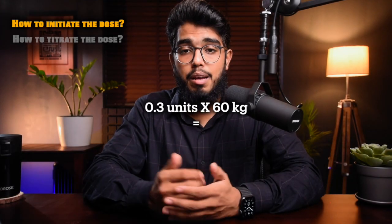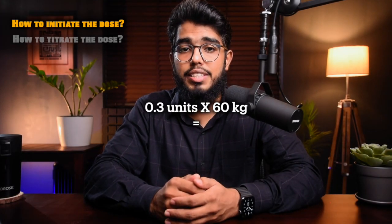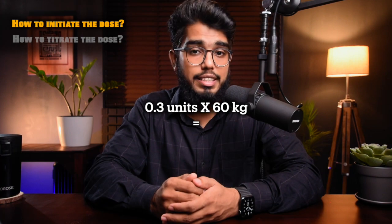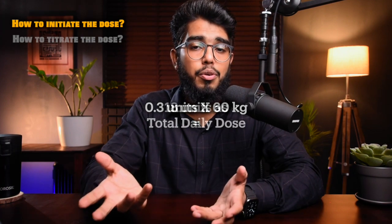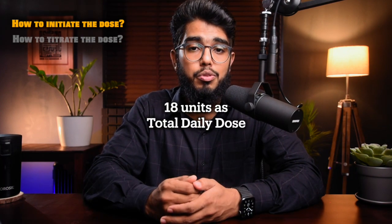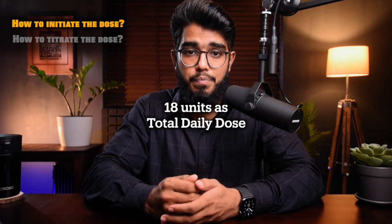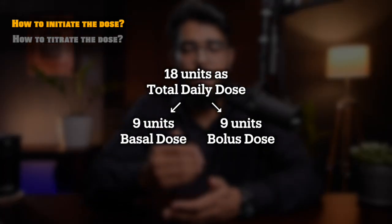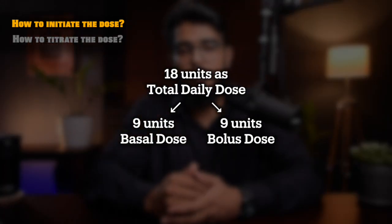For example, a patient weighing 60 kilograms requires 0.3 multiplied by 60, which gives 18 units as the total dose required per day. Half of this is basal insulin: 18 divided by 2 gives 9 units.